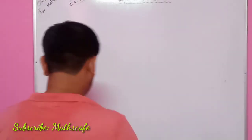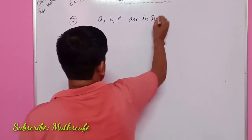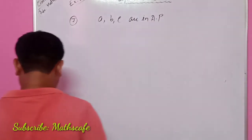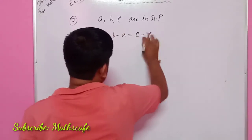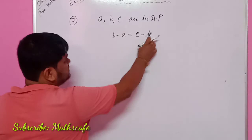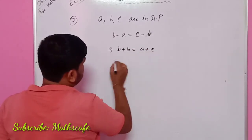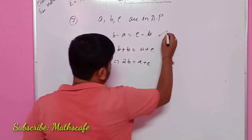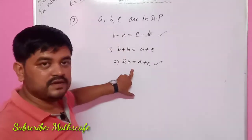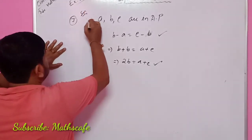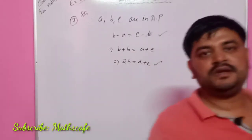So A, B, C are in AP. So we can write here: B minus A equals C minus B. So the difference is the same common difference. So B plus B equals A plus C, so we can get 2B equals A plus C. Since A, B, C are in AP, then B minus A equals C minus B, which means 2B equals A plus C. So we can write this condition.